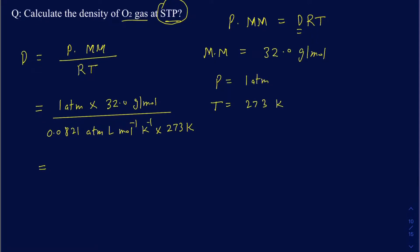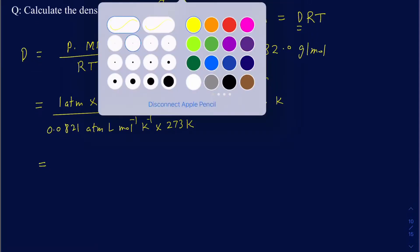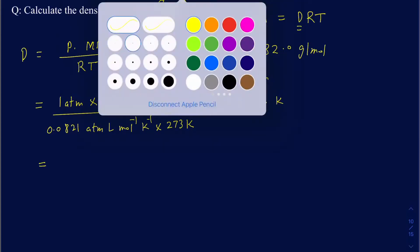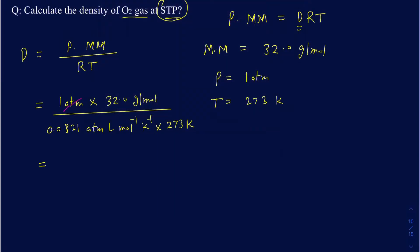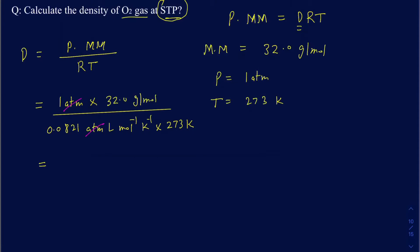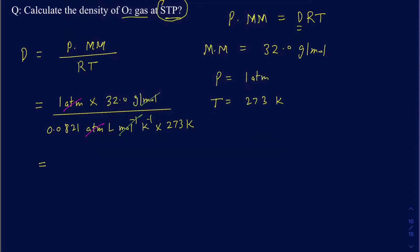You want to make sure you cancel out all the units that would cancel out in this particular question. Your atmosphere goes away. Then you can say your moles will go away as well, and then your Kelvin will also go away.